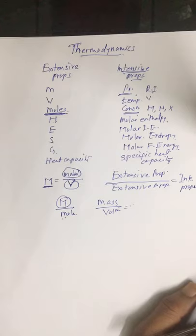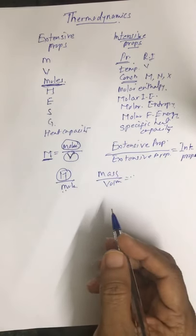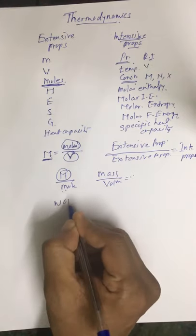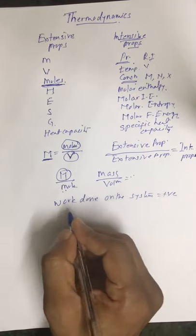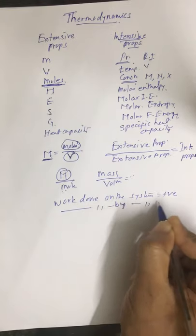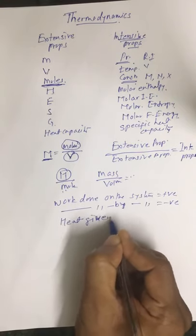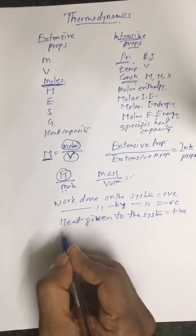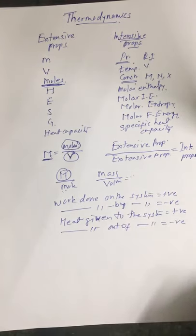We have mentioned many examples. Now in thermodynamics we must mention the sign convention. Work done on the system is positive, and heat given to the system is positive. Work done by the system is negative, and heat given out of the system is negative. Sign convention is very important.